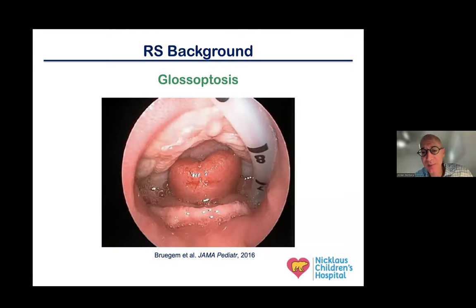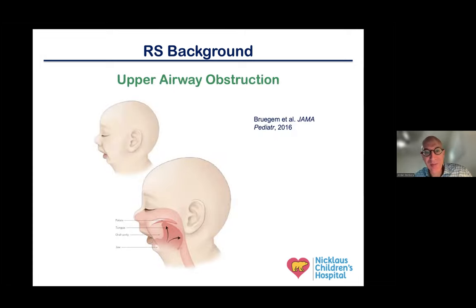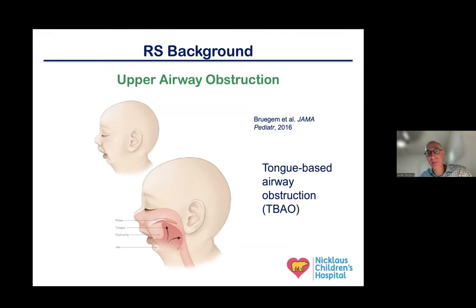For glossoptosis, we evaluate with bedside laryngoscopy, having our ENT colleagues take a look. If we see the tongue positioned further back and blocking the airway — sometimes sitting up into the cleft palate — that is glossoptosis. For upper airway obstruction, which in this case is really tongue-based airway obstruction, a lot of the assessment comes from bedside laryngoscopy. We want to establish that the tongue is the issue and distinguish it from lower airway problems like laryngomalacia or tracheomalacia.